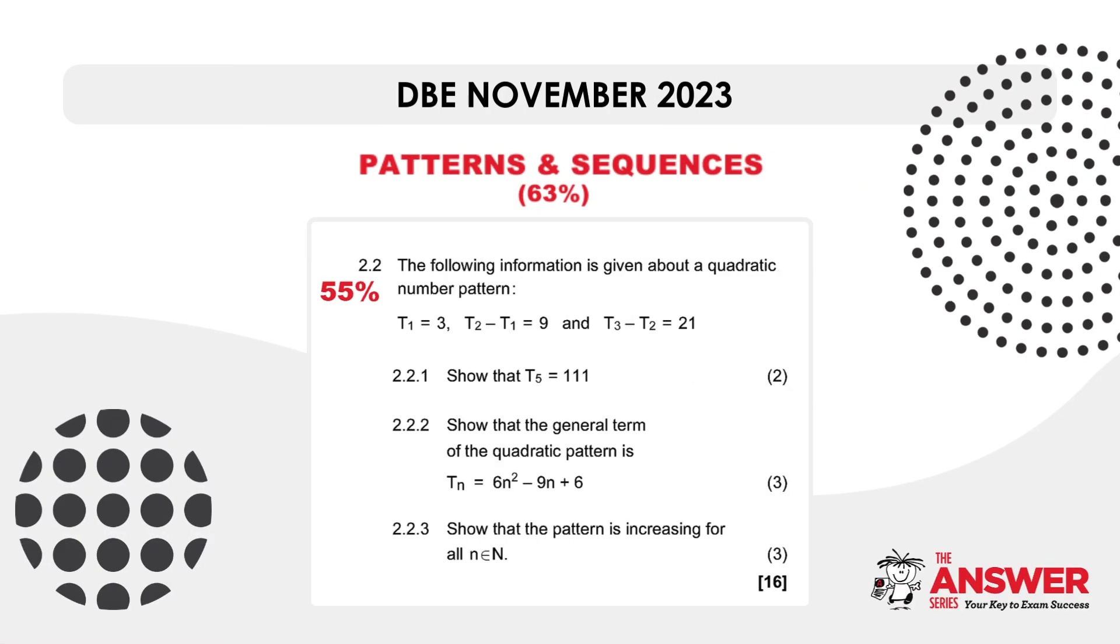If we look now at question 2.2, where a 55% average was achieved. This question was about a quadratic number pattern. The learners first had to find the fifth term, then the general term, and then in the third part they had to show that the pattern was increasing for all natural numbers of n.